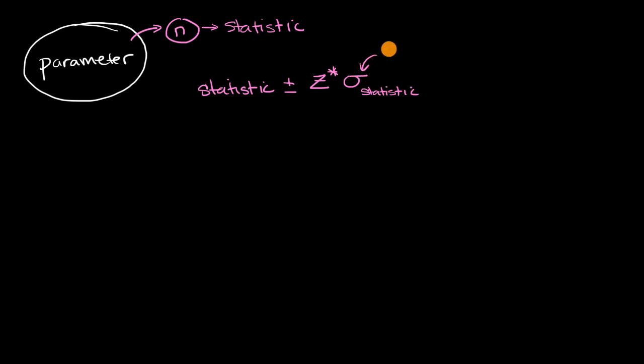Now what we'll see is we often don't know this. To know this, you oftentimes even need to know this parameter. For example, in the situation where the parameter that we're trying to estimate and construct confidence intervals for is the population proportion. What percentage of the population supports a certain candidate?